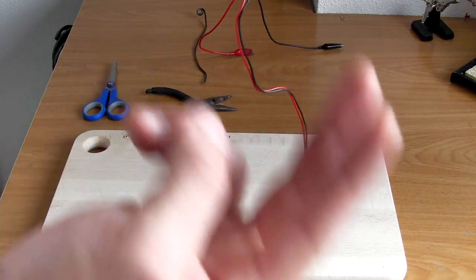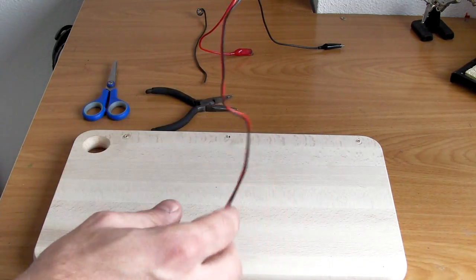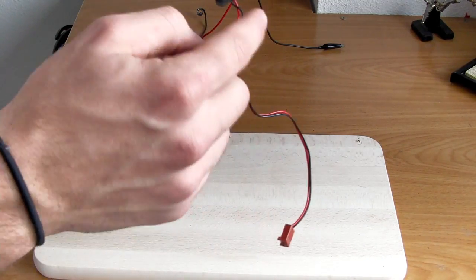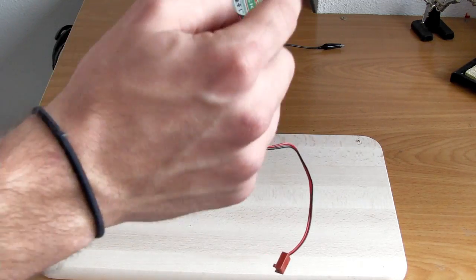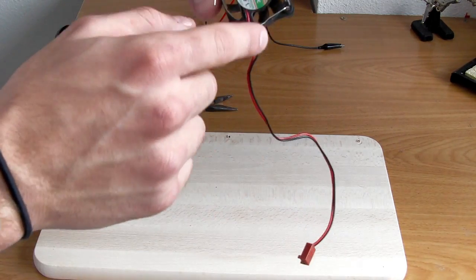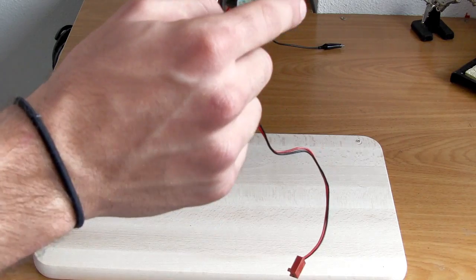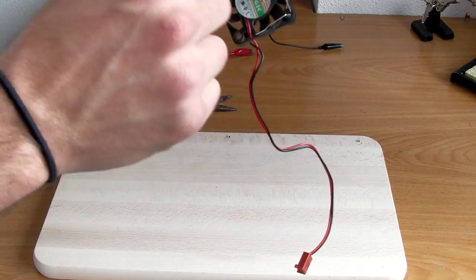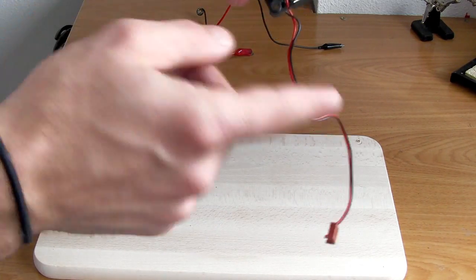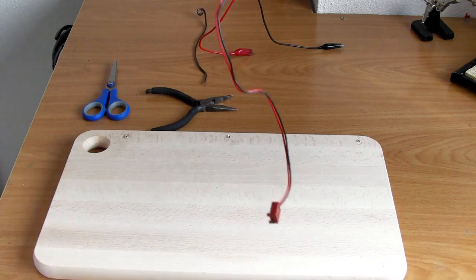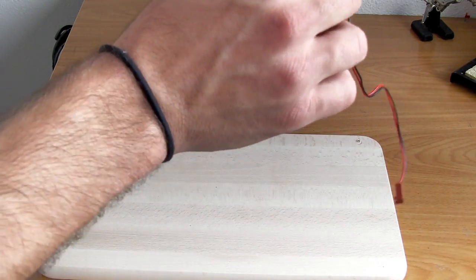So I put them in series, so the long lead goes here, then a short lead with a long lead, and then short lead with a long lead, cathode and anode together. So that's what I'm going to do.